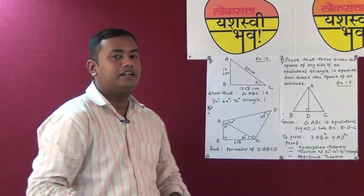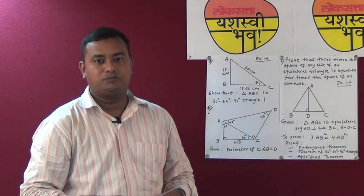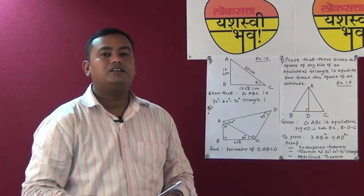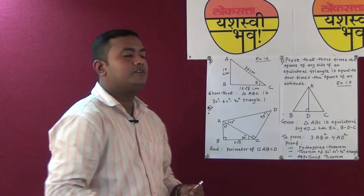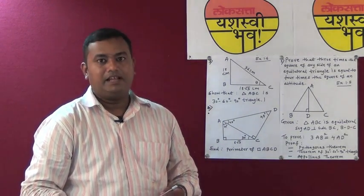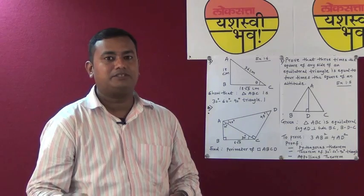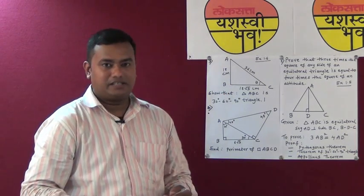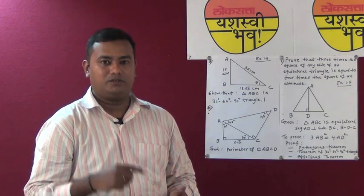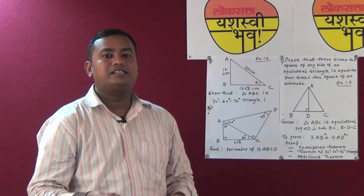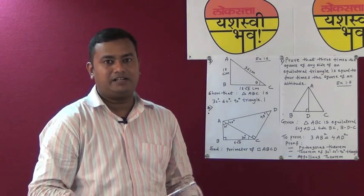For example, in the first lesson of similarity, exercise 1.6, a sum is given where three sides of a triangle are given and you have to prove the triangle is a 30-60-90 triangle. You can solve this sum by two ways: either use the converse of Pythagoras theorem and then use trigonometry from the next chapter, or use the converse of Pythagoras theorem, the converse of the 30-60-90 triangle theorem, and the angle sum property of a triangle. Whichever method you feel comfortable with, you can use. It is not necessary that if the sum is in similarity, you cannot use trigonometry.